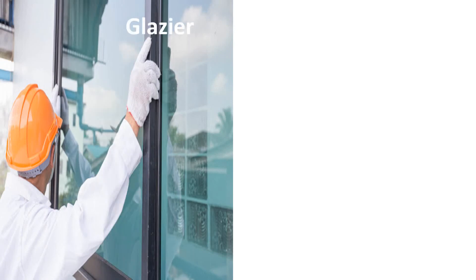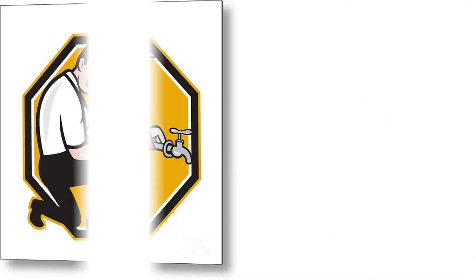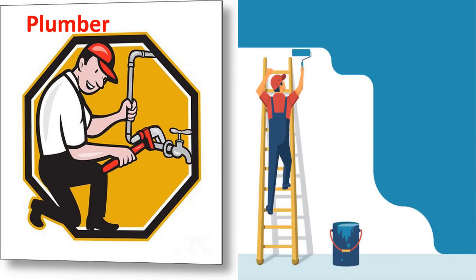The carpenter fits the doors and windows and also makes furniture. The glazier fits the glass panes in doors and windows. The electrician does the electrical fittings. The plumber lays the water pipes throughout the house. Each person has an important job. Finally, the painter is called and paints the house as per your choice, giving it the final touch.